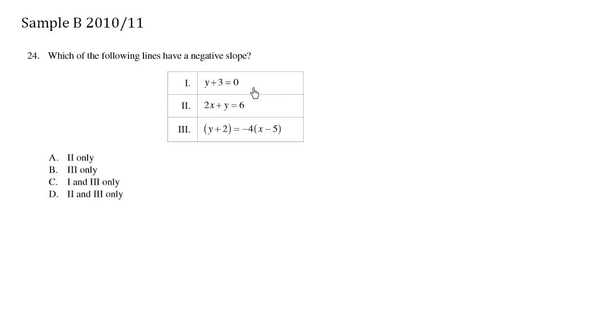Which of the following lines have a negative slope? So let's try the first one, y plus 3 equals 0. This is the same thing as y equals negative 3.